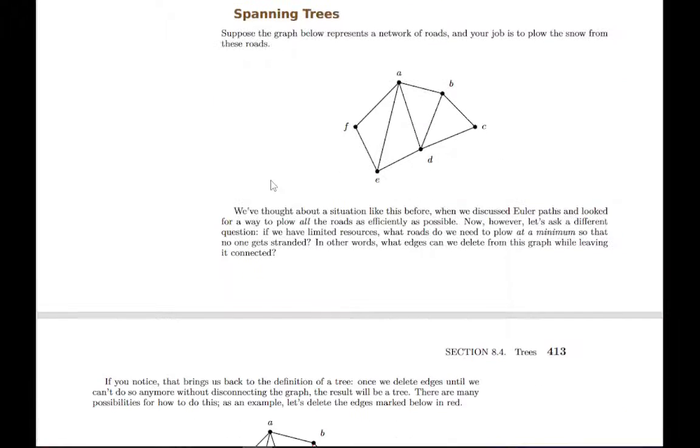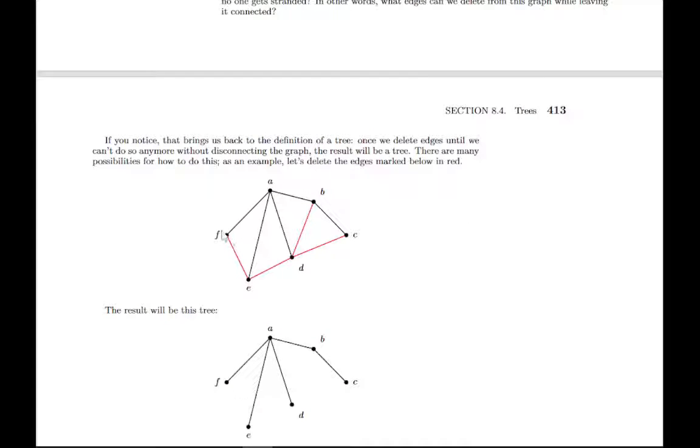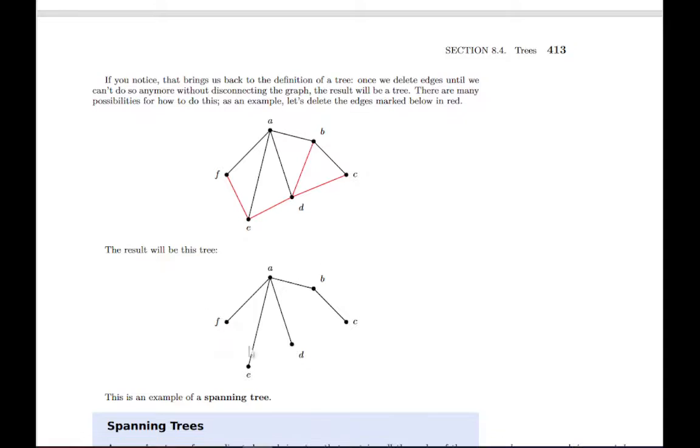The second application of trees are called spanning trees. If we take a general graph like this one, this example has a network of roads connecting different houses or different intersections. If we want to use our resources as efficiently as possible, if we want to plow just the minimum number of roads so that no one is isolated, everyone has a route out of their house, we can build what's called a spanning tree. We don't need to plow all these roads to make a connected graph. We can start with this graph and start deleting ones that we don't need. If we start deleting redundant roads, we end up with this spanning tree.